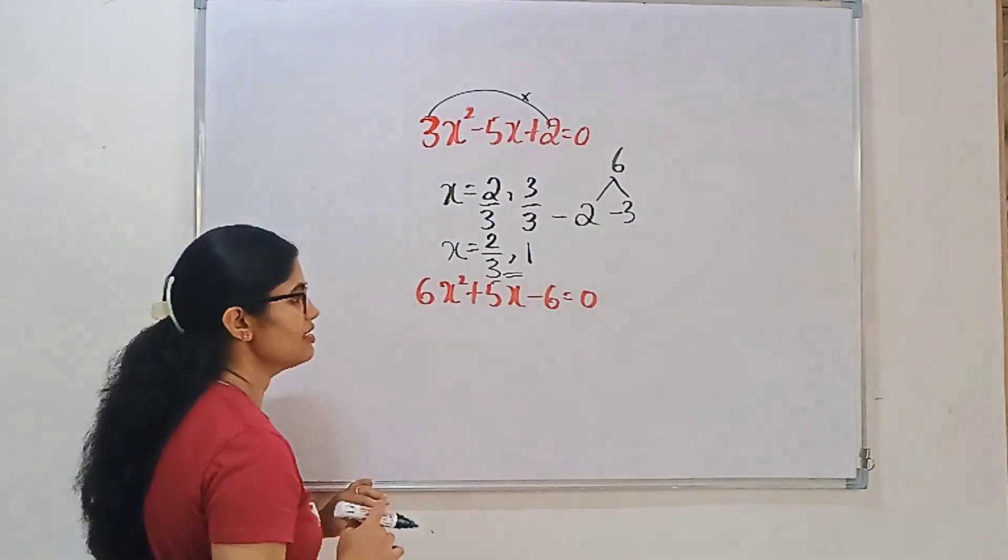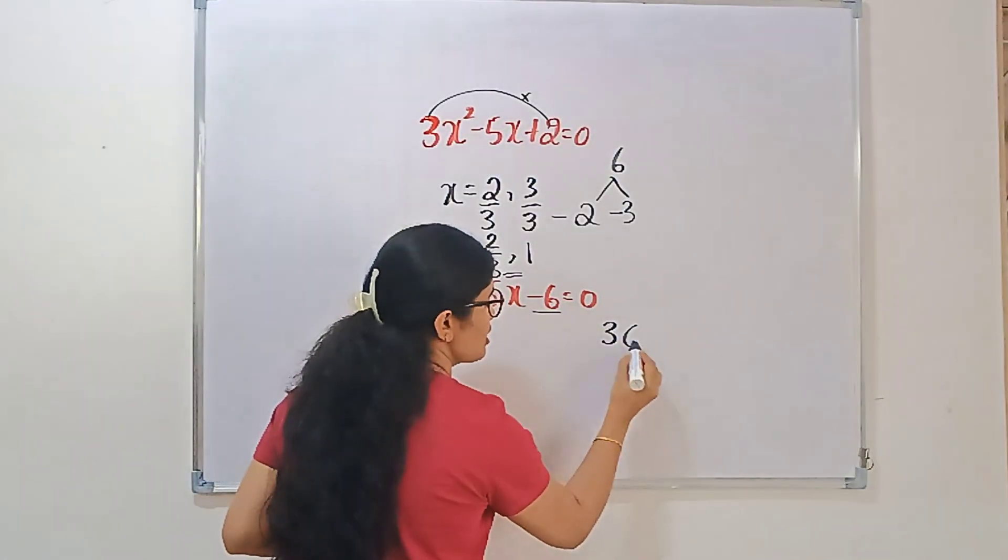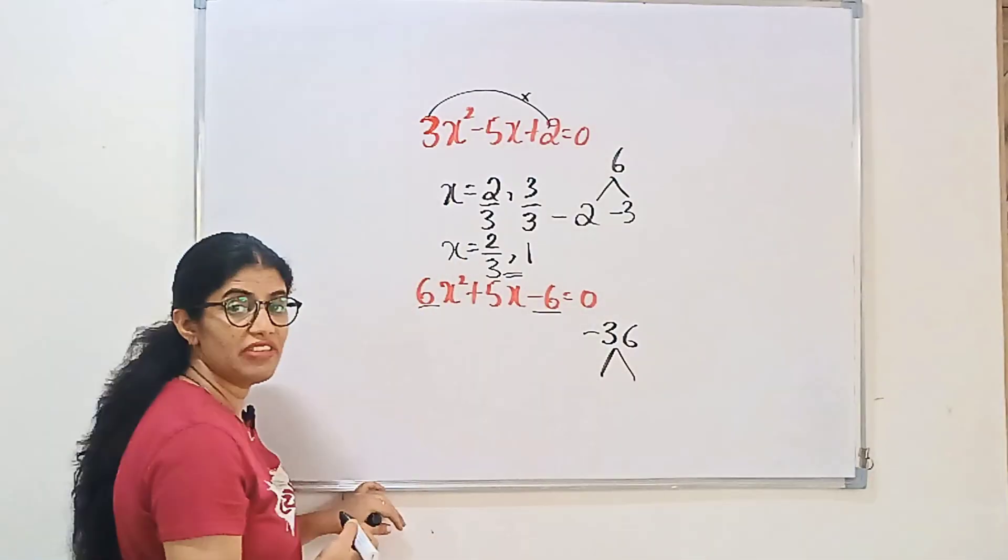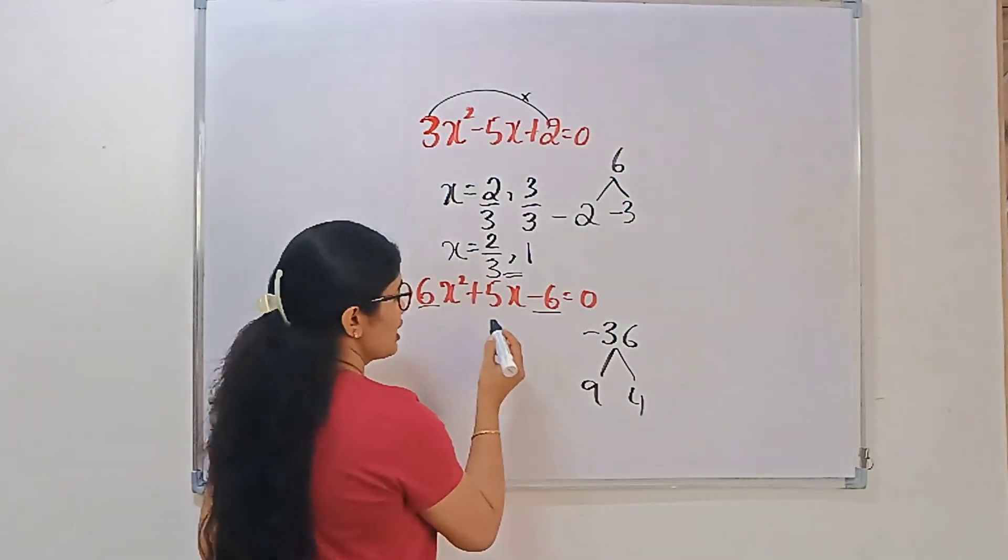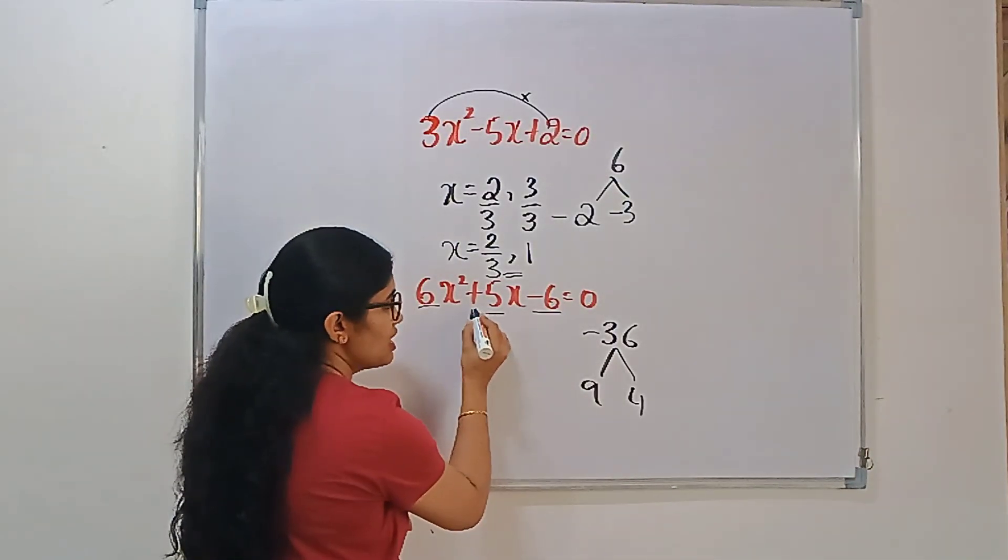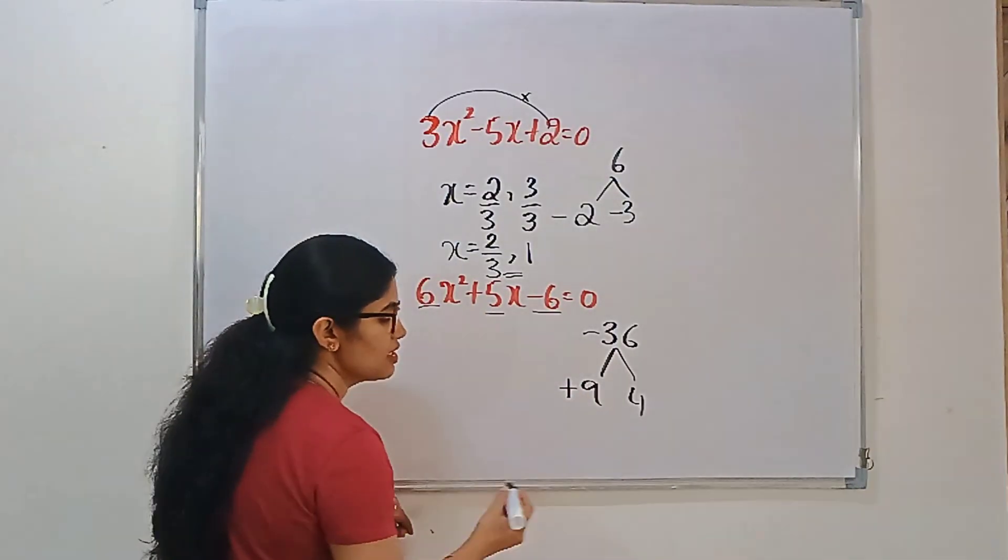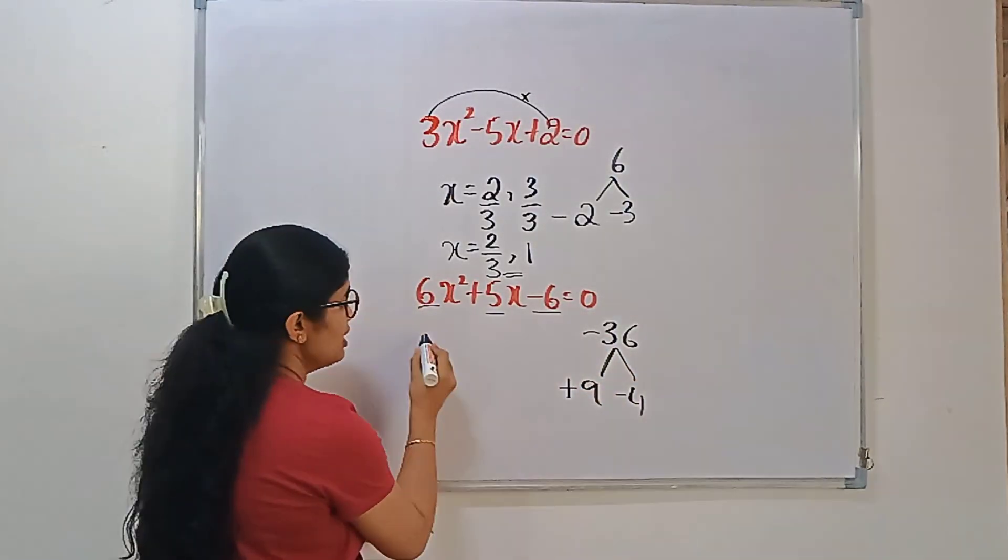Next, let us consider this. Multiply the first and last coefficient. 6 times 6 is 36 minus 36. And go with the factors of 36. So if I consider 9 and 4, can I get 5? Yes. For if it is positive here, for a bigger number, we should be positive. For a smaller number, we should get negative. See, 9, 4 is 36. We will get it.